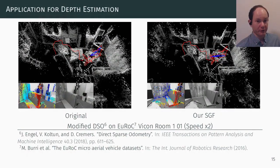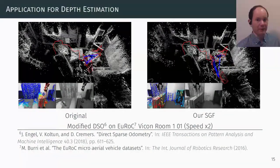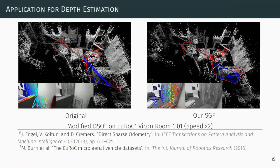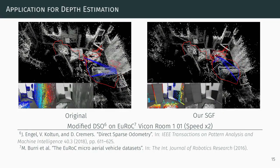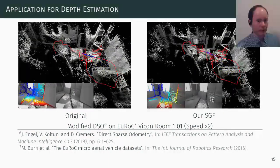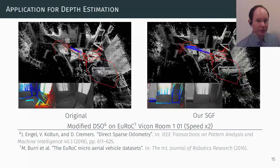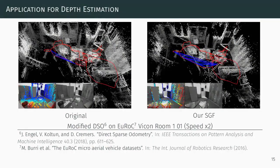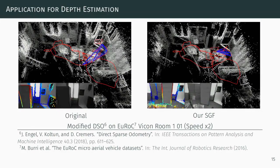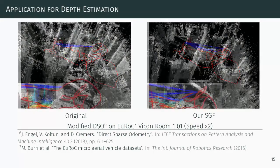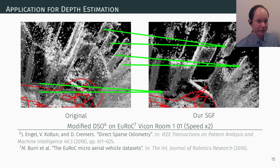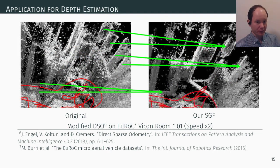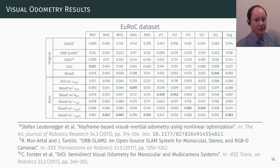We further modified direct sparse odometry to estimate the scene depth with our gradient measure, while tracking remains photometric based. On the UROC dataset we found improvements in map quality as well as trajectory accuracy. The original approach duplicates the same obstacles seen at different times in different positions; in contrast, our resulting map is sparse but more accurate and does not exhibit the same inaccuracies.